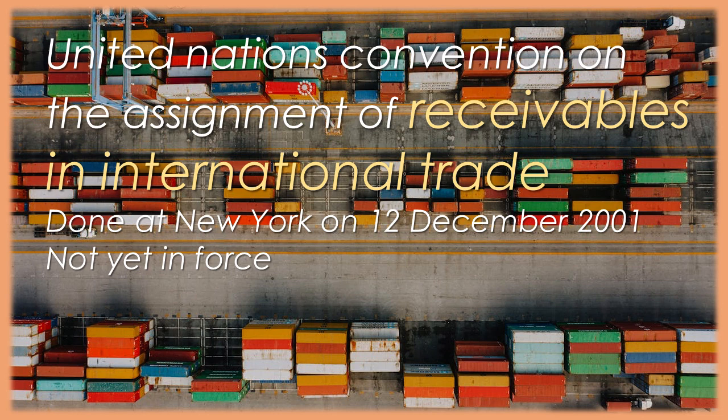Article 6. Party autonomy. Subject to Article 19, the assigner, the assignee and the debtor may derogate from or vary by agreement provisions of this Convention relating to their respective rights and obligations. Such an agreement does not affect the rights of any person who is not a party to the agreement.